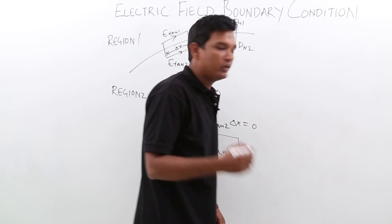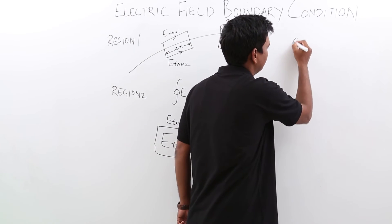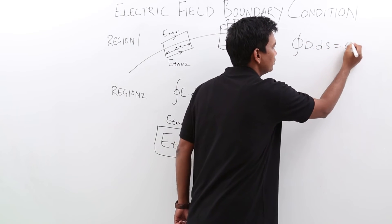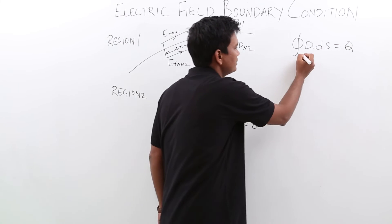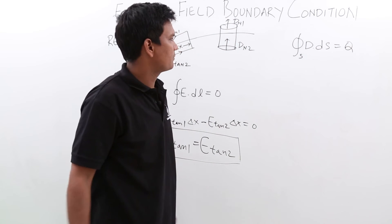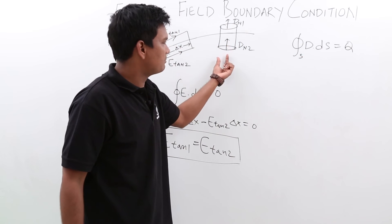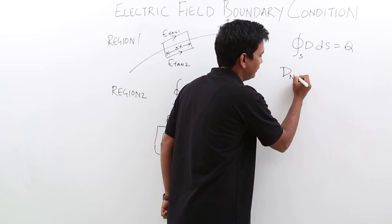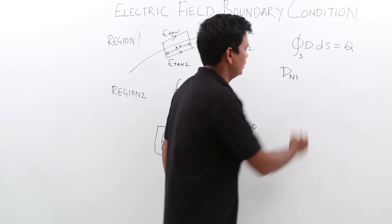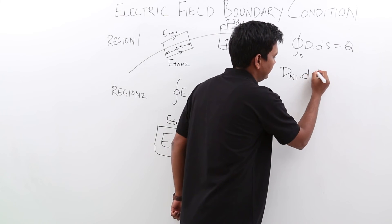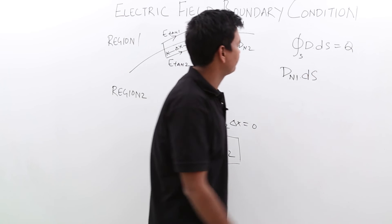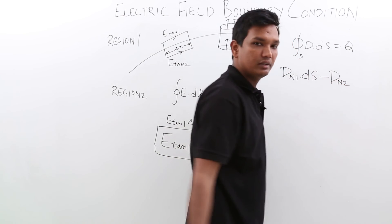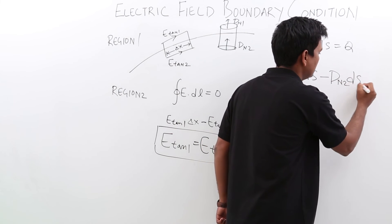From the Gauss law, we know that d dot ds will be equal to the charge enclosed over the closed surface. Now, if I apply same here, can I say that d n 1, the normal one, dot ds the surface area minus d n 2 the surface area ds equal to q.